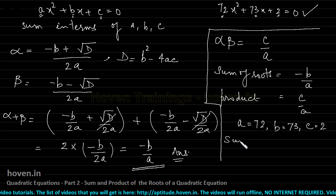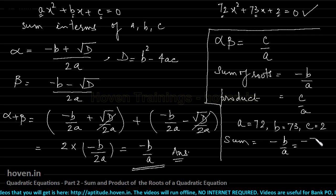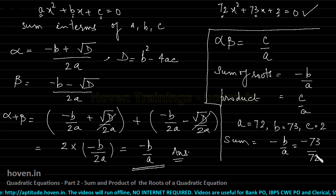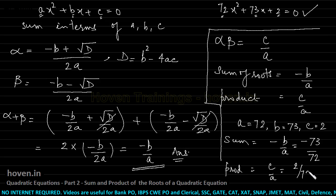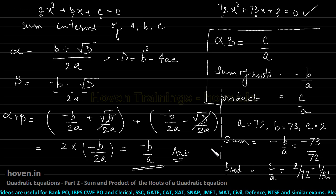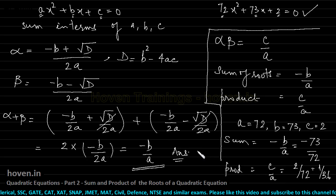So sum is minus b by a which is equal to minus 73 by 72. So this hasn't taken even a millisecond to me. And similarly product is equal to c by a which is equal to 2 by 72 which is 1 by 36. Let us now apply this knowledge to find out the sum and product of various combinations of the roots of a quadratic equation.